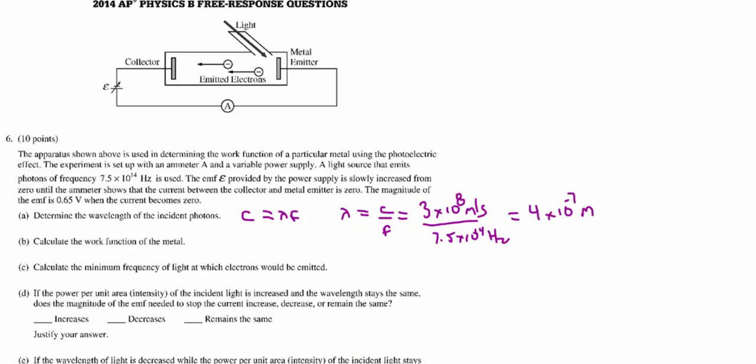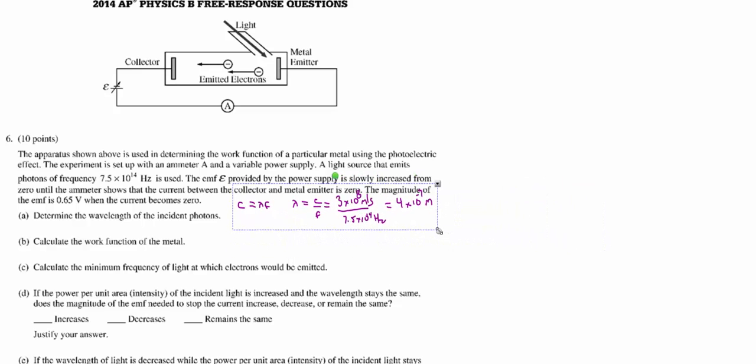Part B is where the true knowledge of photoelectric effect is going to come into play. We are trying to figure out what is the work function of the metal. If you recall, the photoelectric effect equation says the incident energy light must equal your work function plus any additional kinetic energy the electrons have.